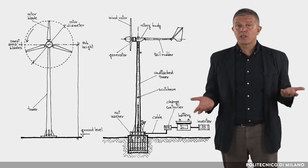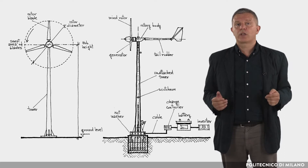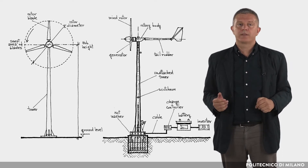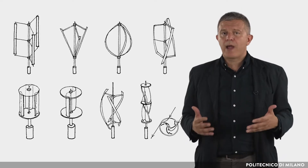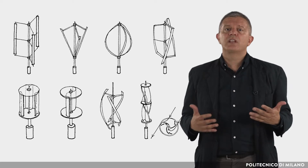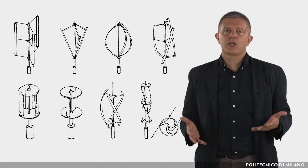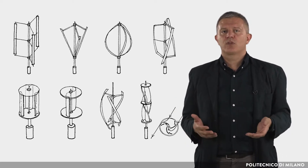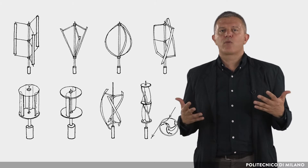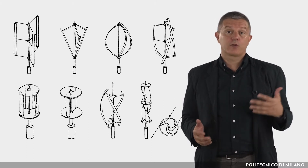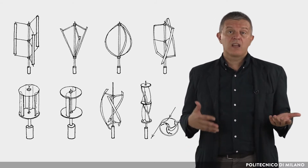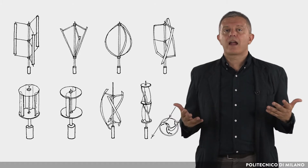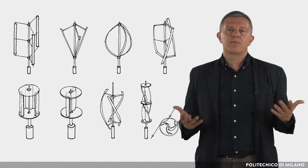A control system slows down or blocks the rotation speed when there is high wind. Vertical axis wind turbines can have different configurations and shapes and do not need a system to follow the variable wind direction. For this reason, they are generally very robust and durable, since they are mechanically simpler.